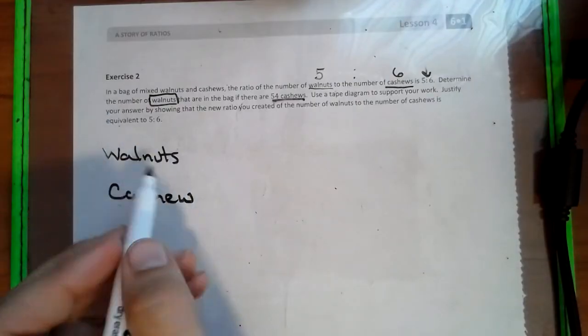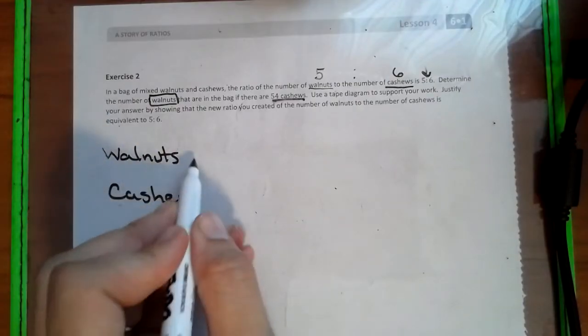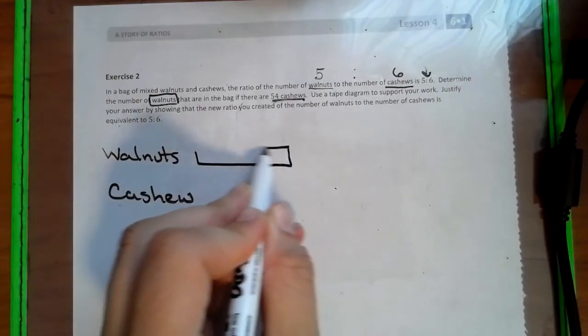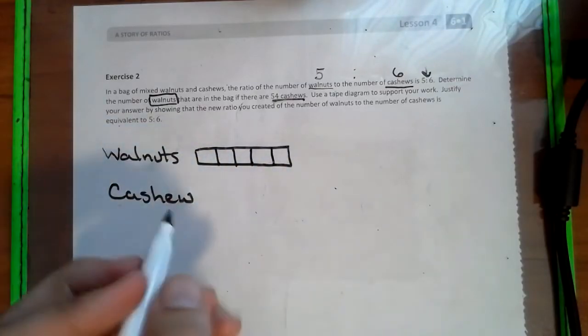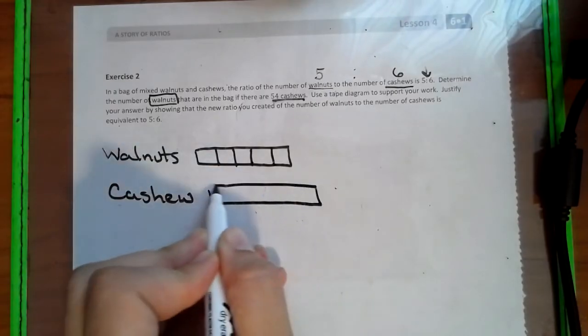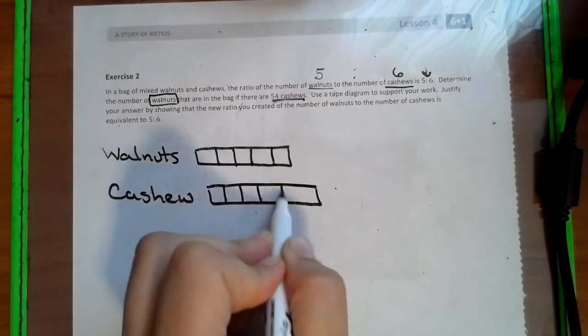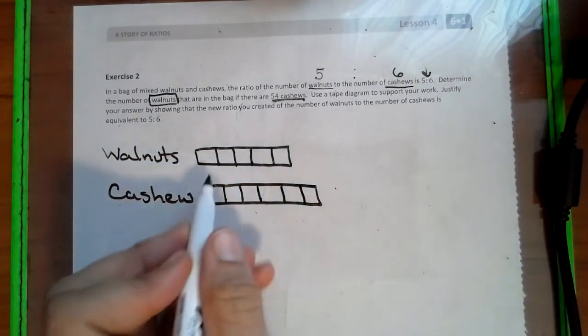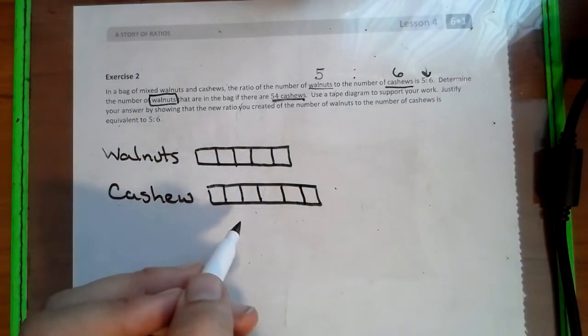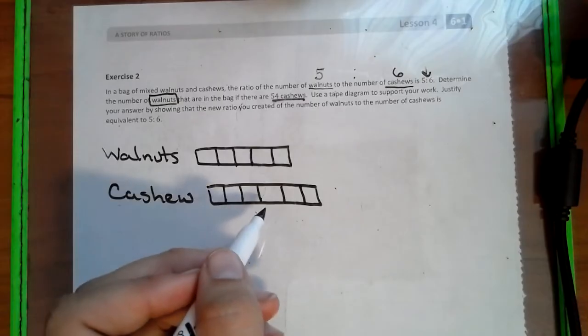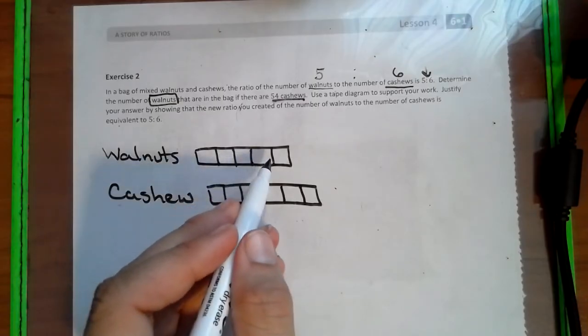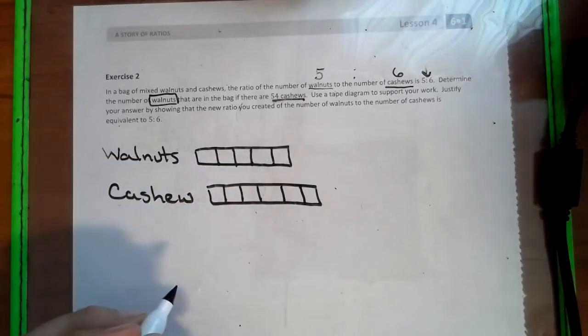And it says that walnuts are in 5, it's 5 boxes. Cashews, 6. All right, see how my tape diagrams look very similar in size? You've got to really try hard during this school year when you're making your tape diagrams to make them look like they're about the same. Not necessarily the same length, just the same size boxes. It looks a lot better.